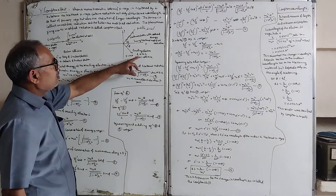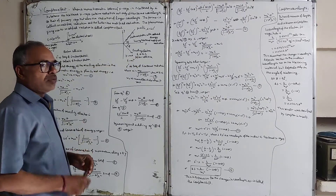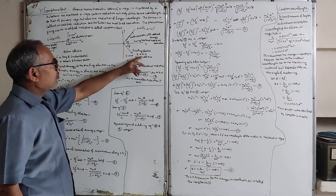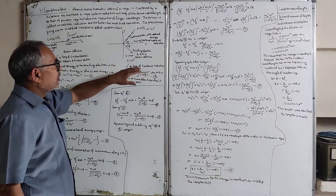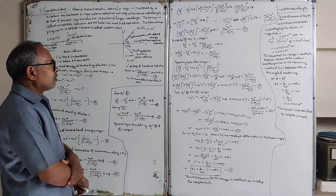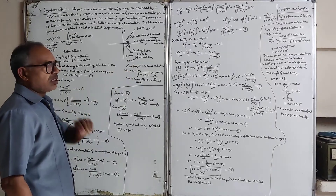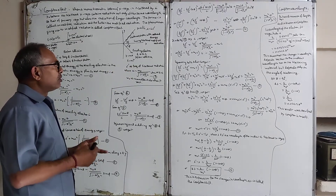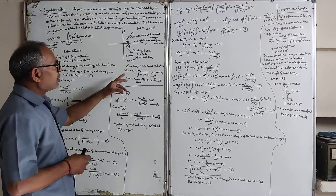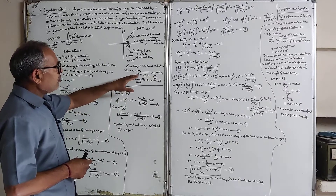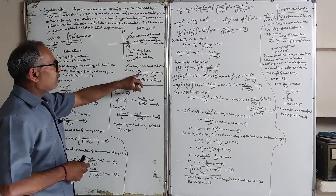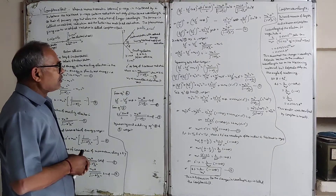The recoiling electron moves with a velocity comparable to the velocity of light, so we use relativistic mechanics. Its momentum is mv and its energy is mc². Since the velocity is comparable to c, the relativistic mass is m = m₀ divided by the square root of (1 minus v² upon c²), where m₀ is the rest mass.